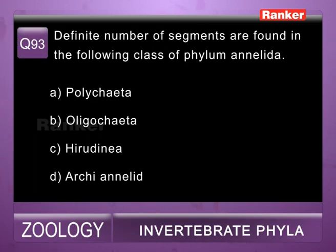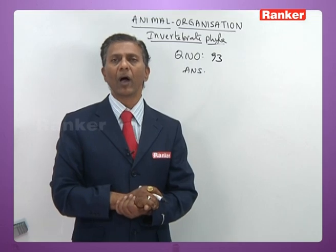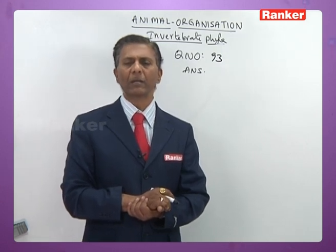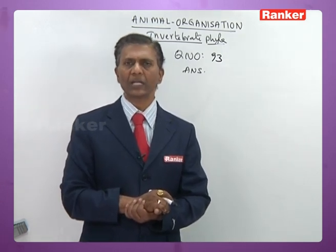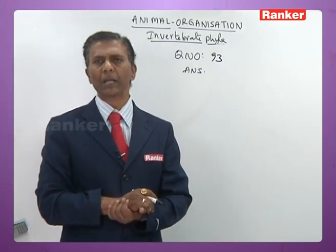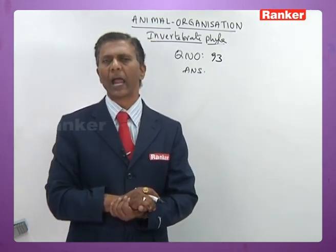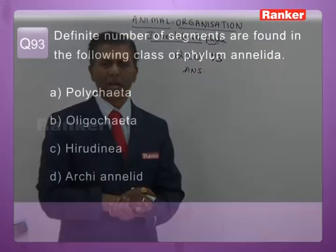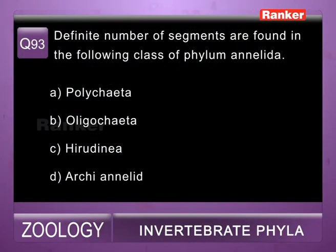Question ninety-three: definite number of segments are found in which class of phylum Annelida — a) Polychaeta, b) Oligochaeta, c) Hirudinea, d) Archiannelida. In all Hirudinarians the number of segments is constant — they have 33 segments and 109 annuli. So ninety-third question correct answer is c) Hirudinea.